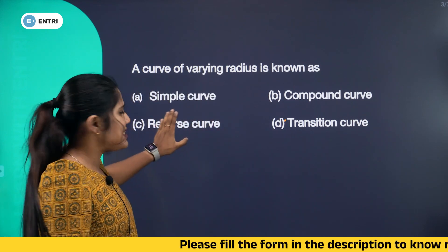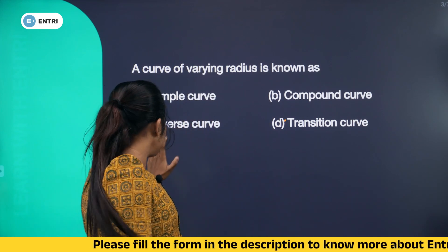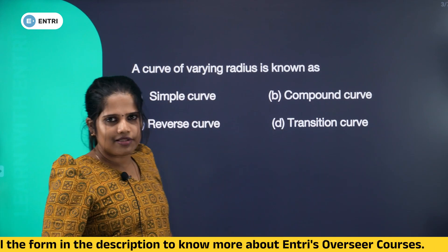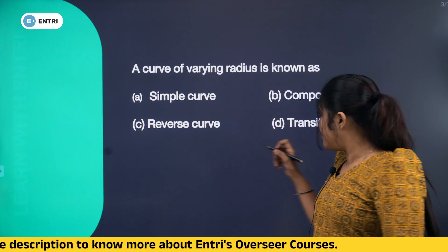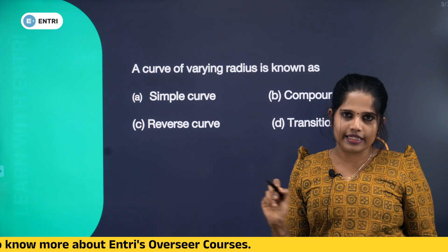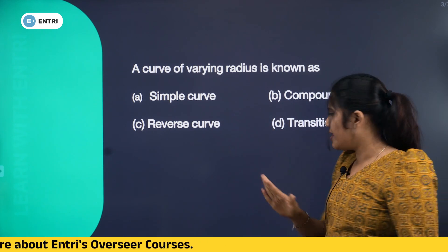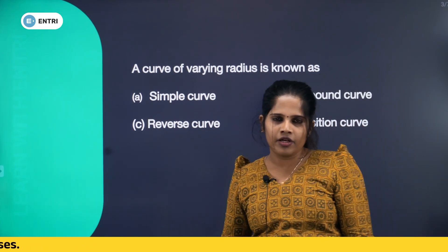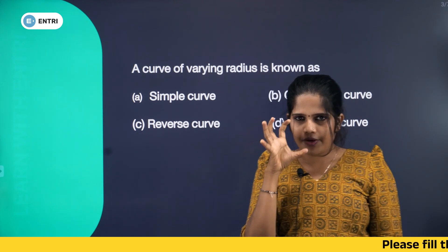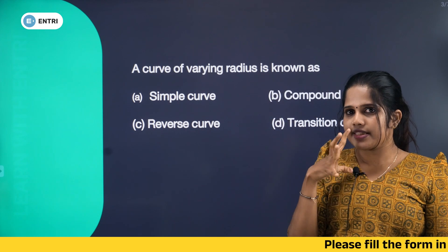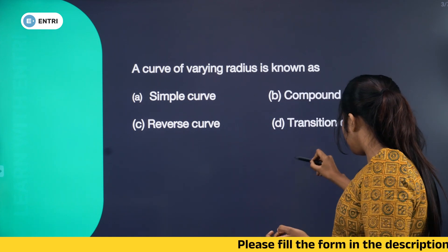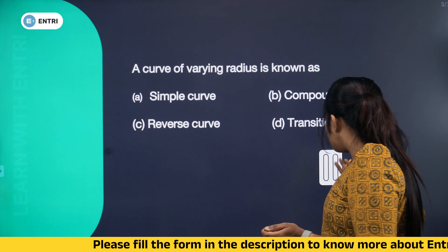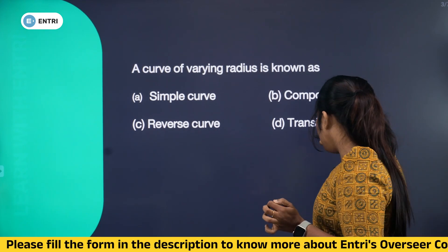Option A: Simple Curve — it will have a fixed radius, so that is not our answer. Option B: Compound Curve. Option C: Reverse Curve — it will have varying radius but in two directions, so we eliminate that. Option D: Transition Curve — this is specifically our answer. Transition Curve is the correct answer.